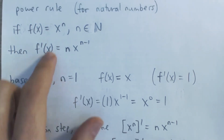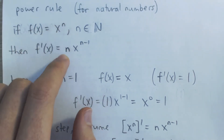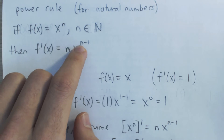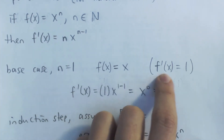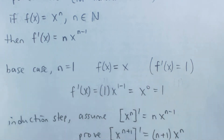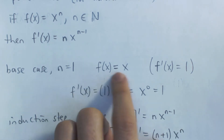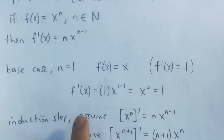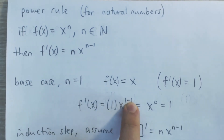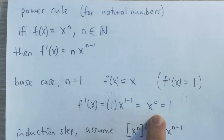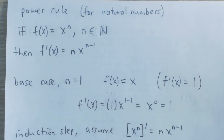Is the derivative of x to the 1 equal to 1 times x to the 1 minus 1? So here we go: f of x equals x. We know the derivative of x is 1, just by the derivative of the identity function, or maybe you just know the slope of the line y equals x is 1. And using the power rule, f prime of x is 1 times x to the 1 minus 1, which gives x to the 0, which indeed is 1. So it does work for n equals 1.